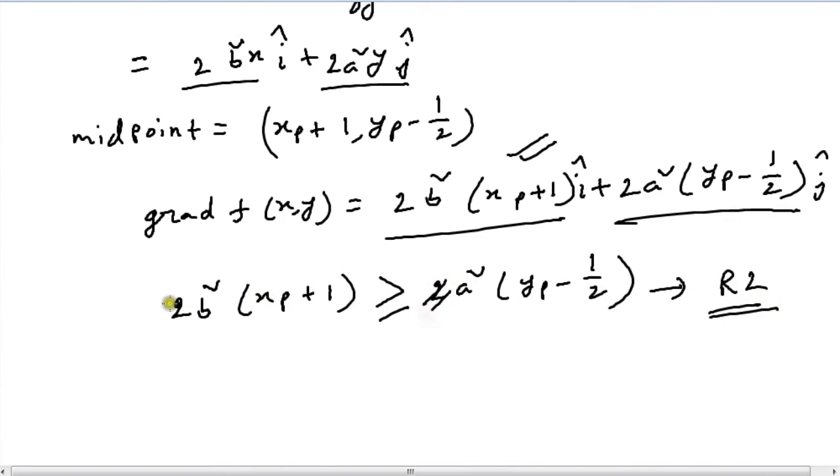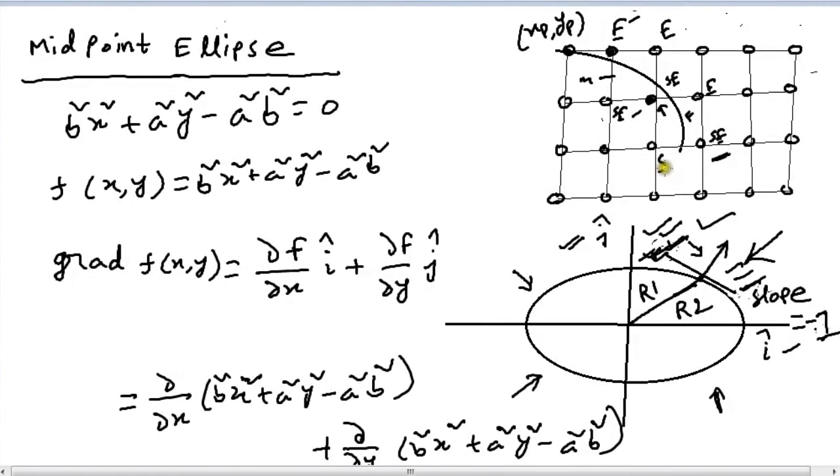Of course, we can just cut out the 2 because it has absolutely no part in the comparison. So we can simply compare b²(xp + 1) and a²(yp - 1/2). When this condition is true, we will leave region 1 and calculate for region 2, where we have to choose a pixel between the South pixel and the Southeast pixel.